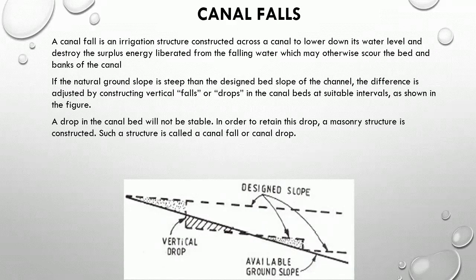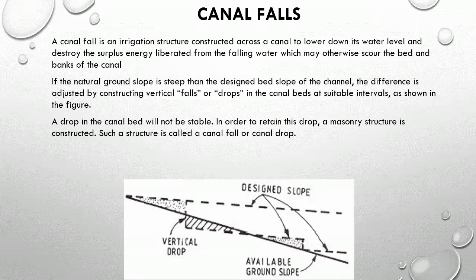A canal fall is an irrigation structure constructed across a canal to lower down its water level and destroy the surplus energy liberated from the falling water, which may otherwise scour the bed and banks of the canal. If the natural ground slope is steep, the difference is adjusted by constructing vertical falls or drops in the canal beds at suitable intervals, as shown in the figure. A drop in the canal bed will not be stable; in order to retain this drop, a masonry structure is constructed. Such a structure is called a canal fall or canal drop.